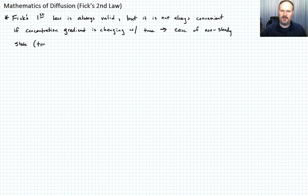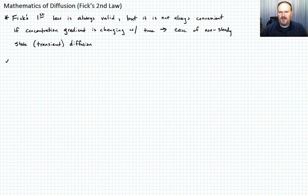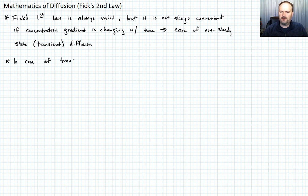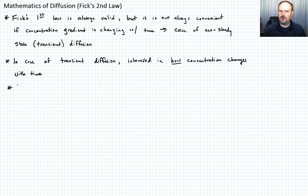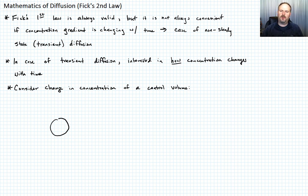We'll call this transient diffusion. In the case of non-steady state diffusion, what we're really interested in is how the concentration is changing with time. To figure that out, we're going to do something similar to what we did with Fick's First Law — we're going to consider the changing concentration in a control volume.